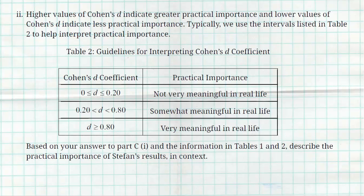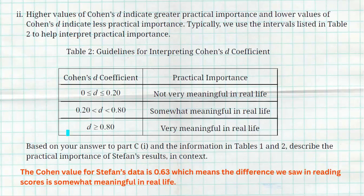For the interpretation, higher values of Cohen's D indicate greater practical importance and lower values indicate less. Using the table: D between 0 and 0.2 is not very meaningful, 0.2 to 0.8 is somewhat meaningful, and greater than 0.8 is very meaningful. Our value of 0.63 falls in the middle range, so the difference in reading scores is somewhat meaningful in real life. Even though we concluded there was a statistically significant difference, it might not be meaningful enough to tell everyone to read in the afternoon instead of the morning.